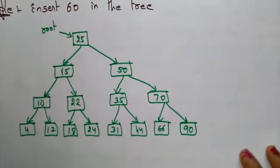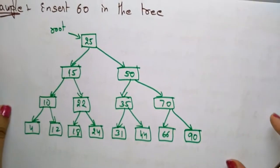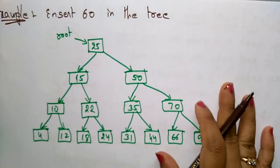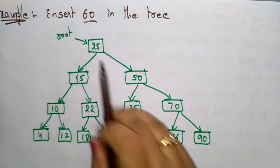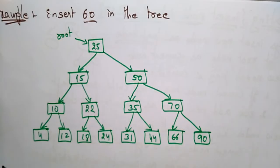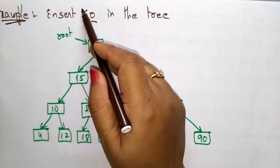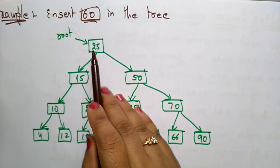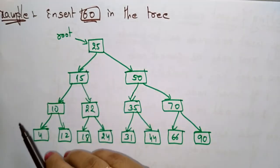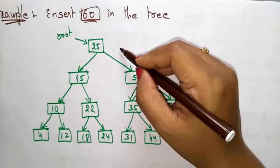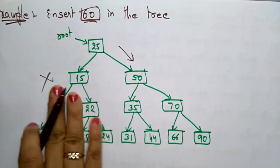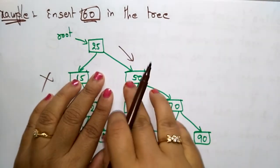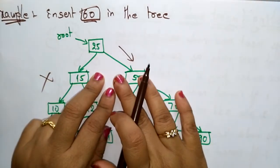Now let's see an example. Here I want to insert the value 60 into this binary search tree. First, start at the root node. The element I want to insert is 60. Check whether 60 is greater or less than 25. Since 60 is greater than 25, come to the right — discard the left subtree and focus on the right subtree.